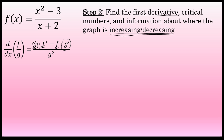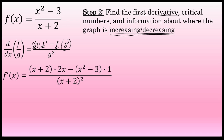In the case of x squared minus 3 over x plus 2, the derivative is the denominator, x plus 2, times the derivative of the numerator. The derivative of x squared minus 3 is 2x, minus the numerator unchanged, x squared minus 3, times the derivative of the denominator. The derivative of x plus 2 is just 1, so multiplying by a factor of 1 won't change anything.